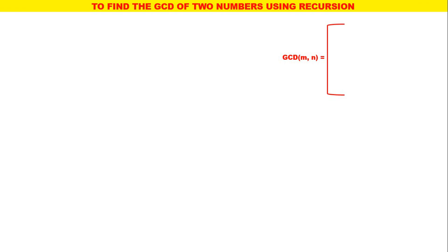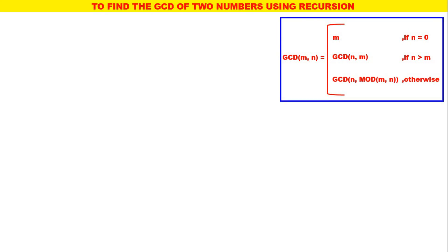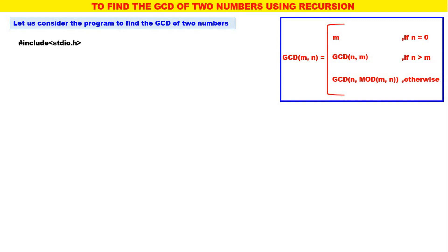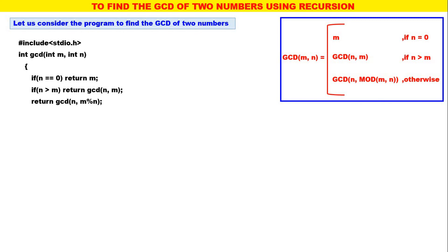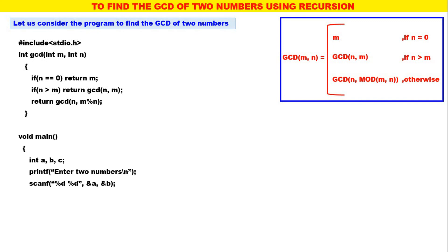Now let us consider the program. This is the GCD recursive function: GCD of m, n. If n is equal to 0, return m. If n is greater than m, return GCD of n, m. Otherwise, return GCD of n, m modulo n. That is all the GCD recursive function. Recursive functions are always small and cute. In the main program: enter two numbers A and B, GCD of A and B will be stored in C, print C.